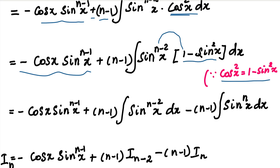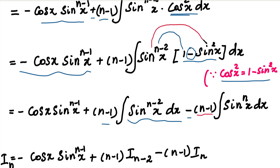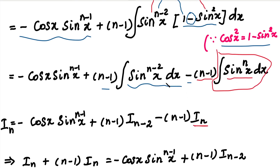So, this is the integration of sin^(n-2)(x) into sin²(x). We substitute back into the expression. In the previous integration, we have sin^(n-2)(x) into sin^(n-2)(x). So in this integration, we substitute into the value of I_n.